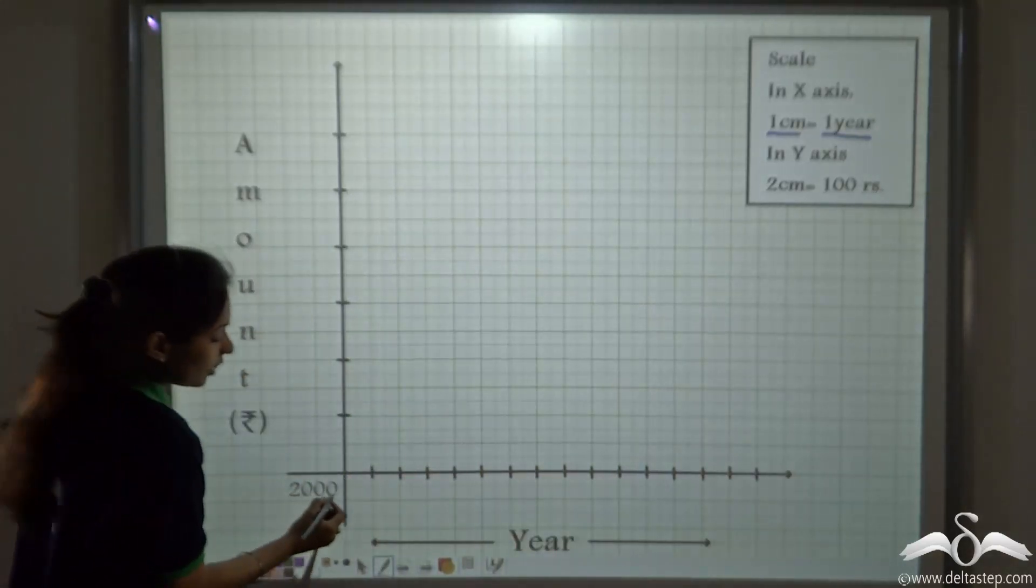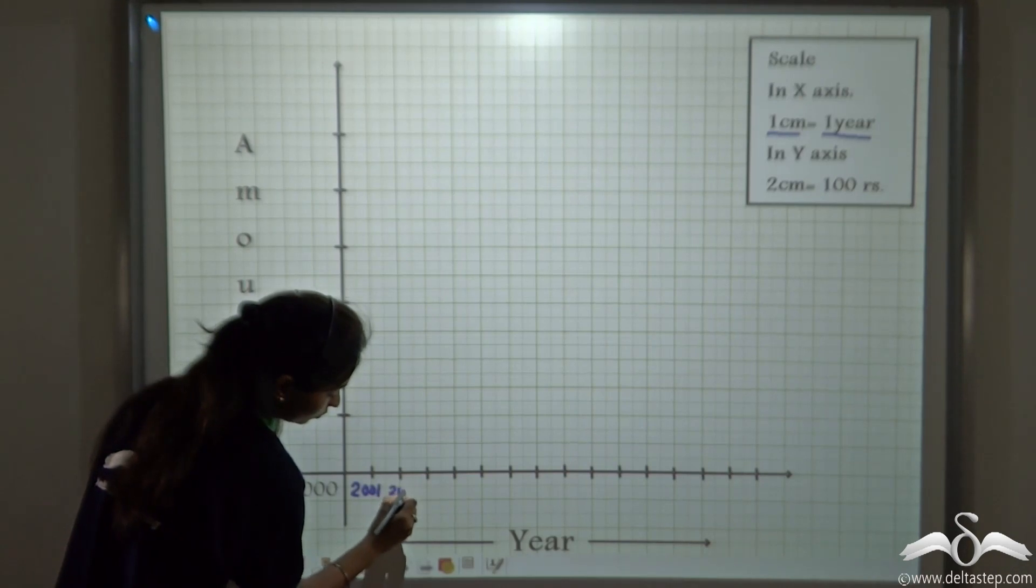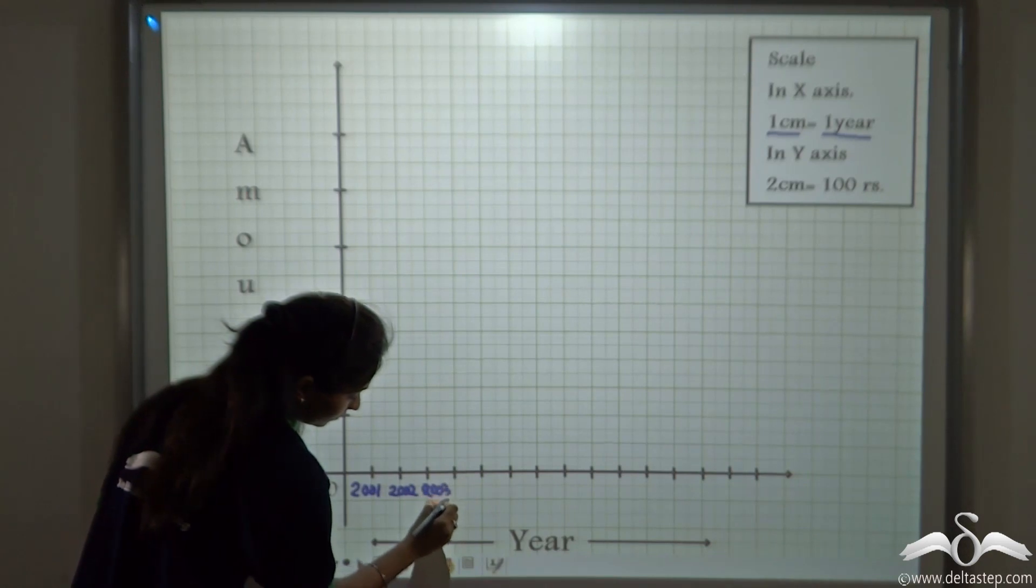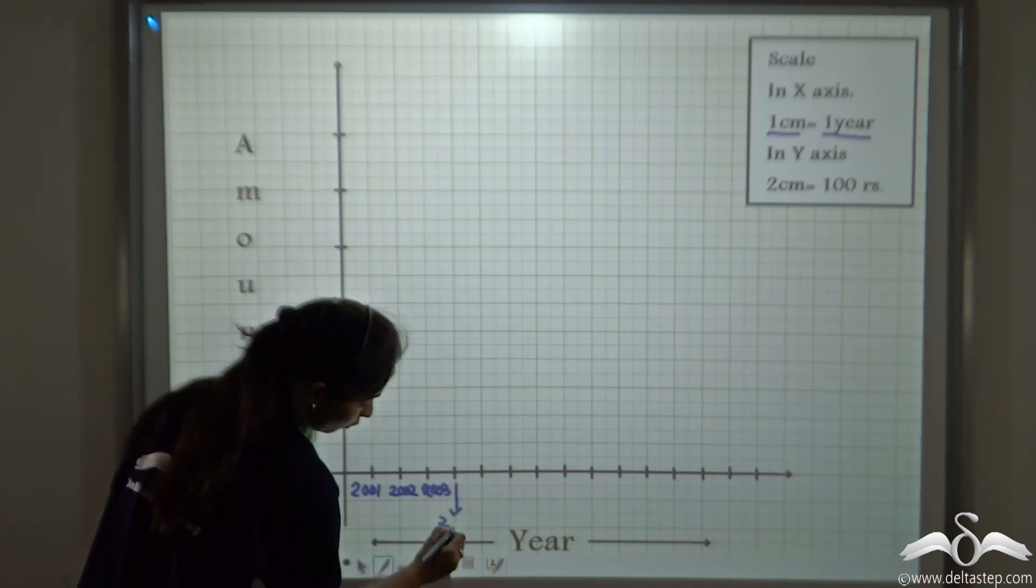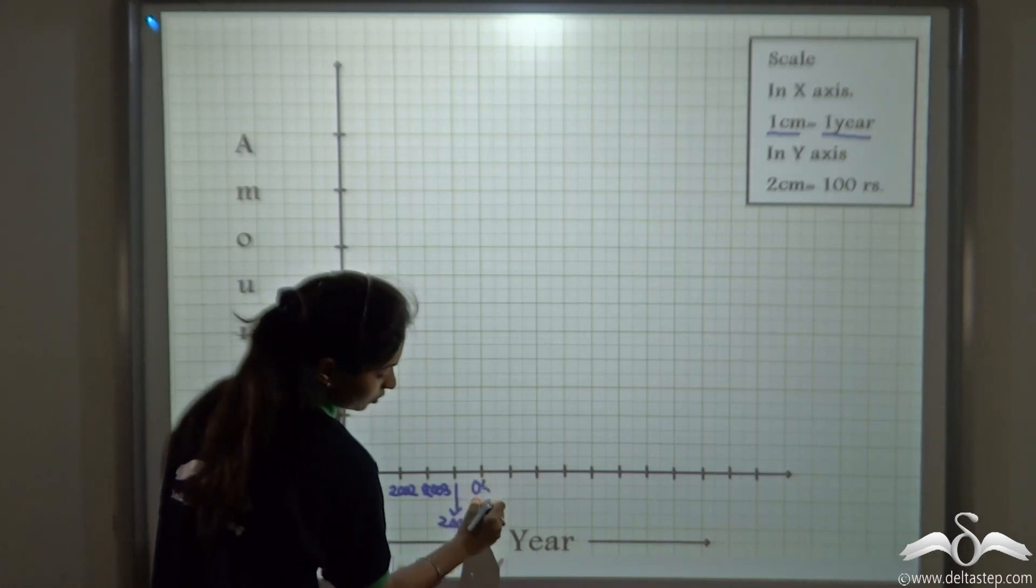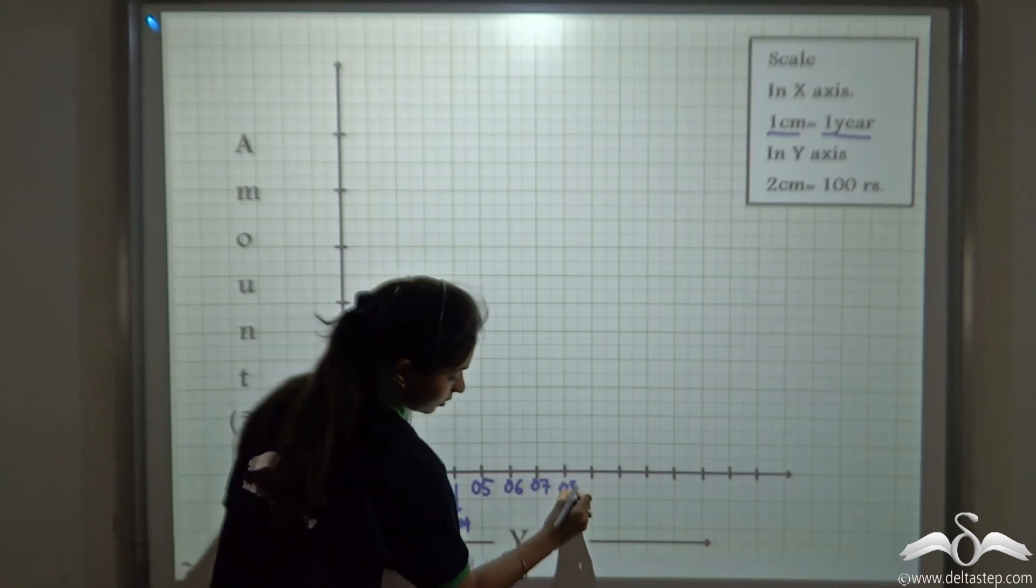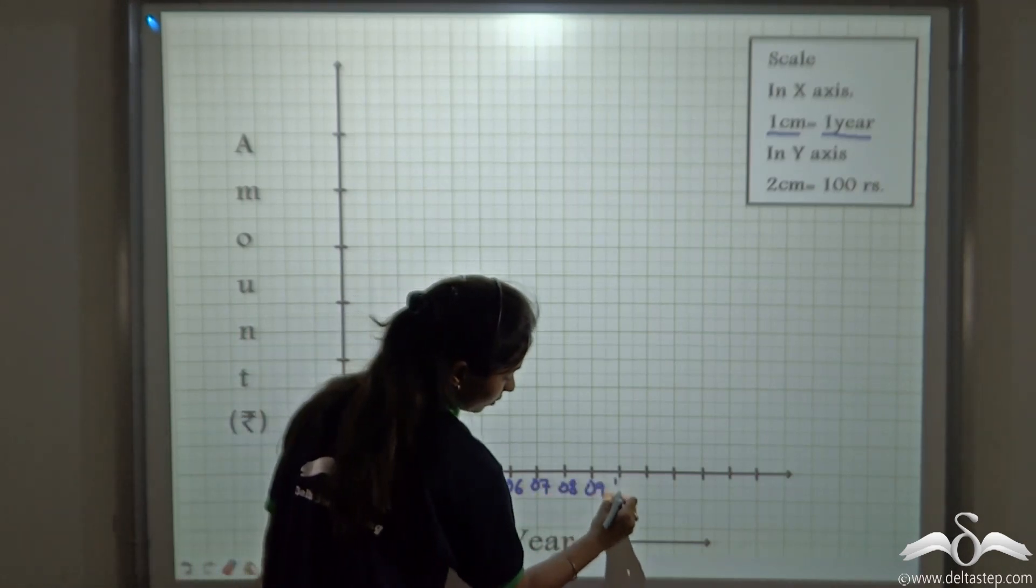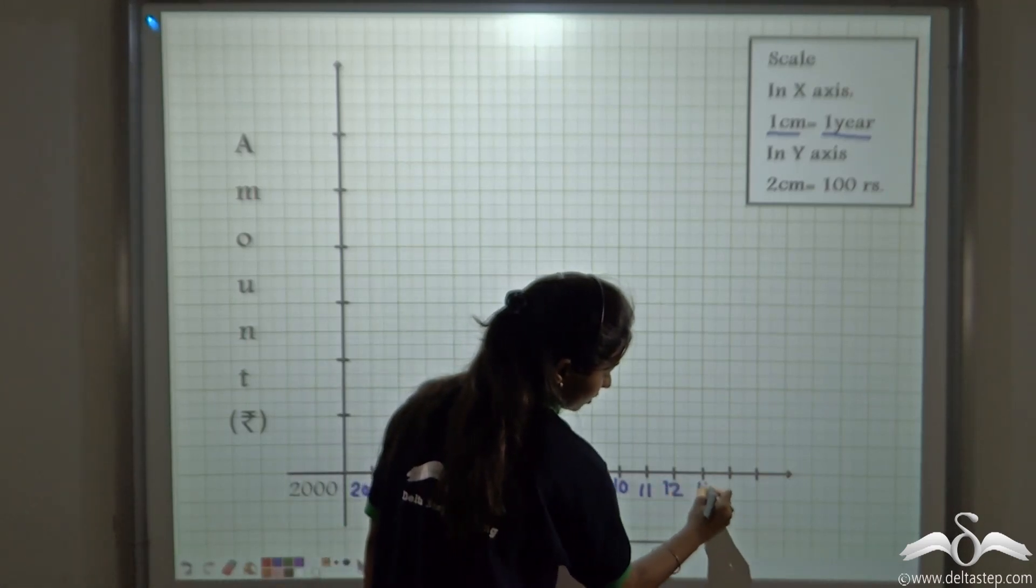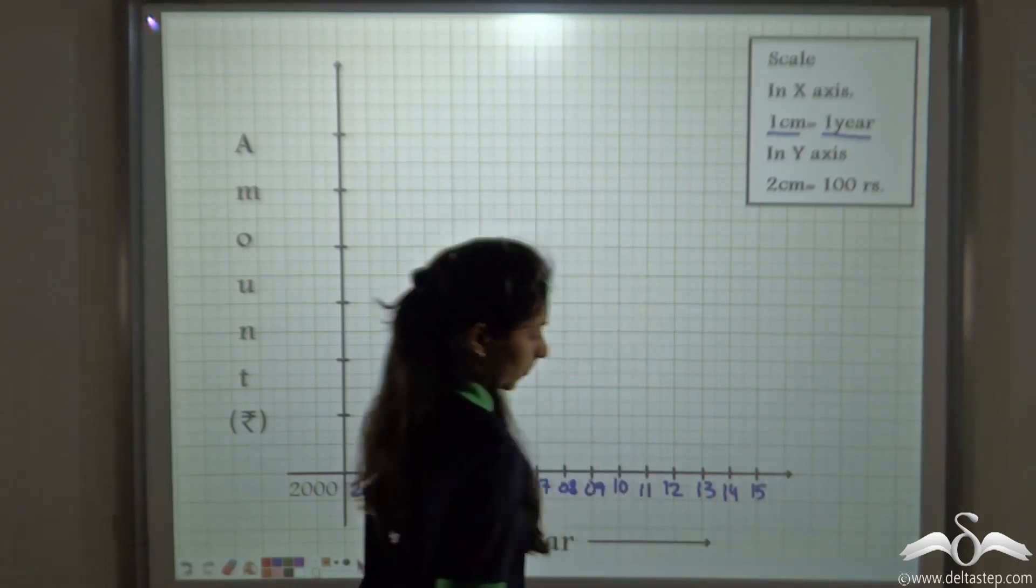If this is 2000, we will mark this as 2001, 2002, 2003, 2004. I am shortening this as 05, 06, 07, 08, 09, 2010, 2011, 2012, 2013, 2014, 2015 okay?